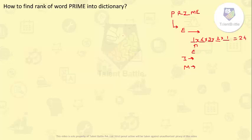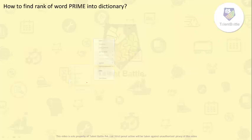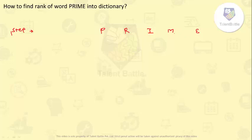Let me tell you a shortcut which will help you to solve the question very quickly. To solve these questions using the shortcut, first write down the word PRIME. The first step is to give a rank to all the letters alphabetically. As you can check for PRIME, according to the alphabet series: E will come first (rank 1), then I (rank 2), then M (rank 3), then P (rank 4), and then R (rank 5). So the first step is to assign ranks 1 through 5 to the given letters.